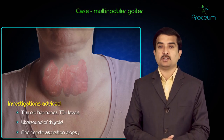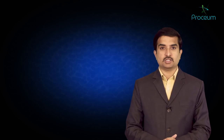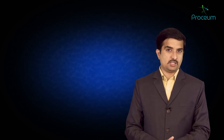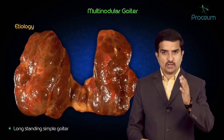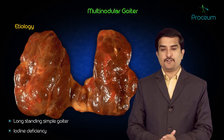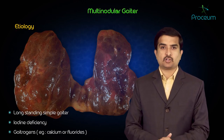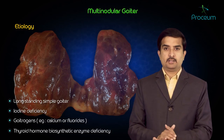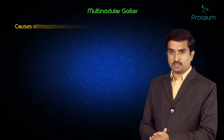Fine needle aspiration biopsy is ordered to rule out carcinoma of the thyroid. Now let us discuss multinodular goiter. What is the etiology of multinodular goiter? It usually develops from long-standing simple goiters, which can arise because of iodine deficiency, intake of goitrogens like calcium and fluorides, or thyroid hormone biosynthetic enzyme deficiency.